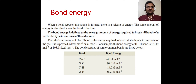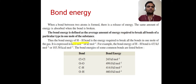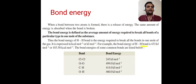Bond energy is defined as the average amount of energy required to break all bonds of a particular type in one mole of the substance. It is expressed in kilocalorie per mole or kilojoule per mole. For example, the bond energy of the hydrogen-hydrogen bond is 433 kilojoule per mole or 103.58 kilocalorie per mole.